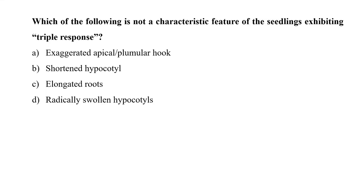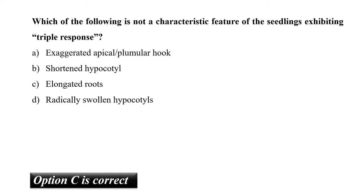The next question is: which of the following is not a characteristic feature of seedlings exhibiting the triple response? The correct answer is elongated roots. The triple response is a typical phenotype after ethylene treatment, which consists of exaggerated apical hook, inhibition of root growth, and shortened hypocotyls — representing the best characterized ethylene response. So our correct option is C, that is elongated roots.